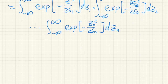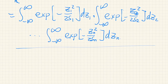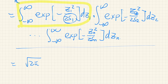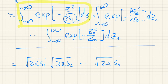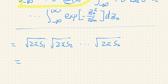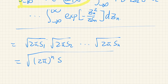As you know from calculus, each such integral equals sqrt(2π·S1), sqrt(2π·S2), and so on. Combining them together, since there are N terms, the result is the square root of (2π)^N times S1 times S2 times ... times Sn.